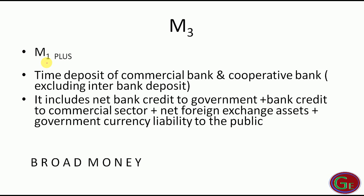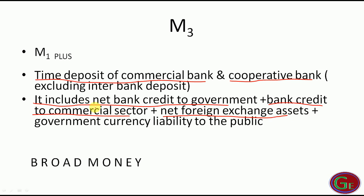M3 equals M1 plus Time Deposits of Commercial Banks and Cooperative Banks. It also includes Net Bank Credit to Government, plus Bank Credit to the Commercial Sector, plus Net Foreign Exchange Assets, plus Government Currency Liability to the Public.